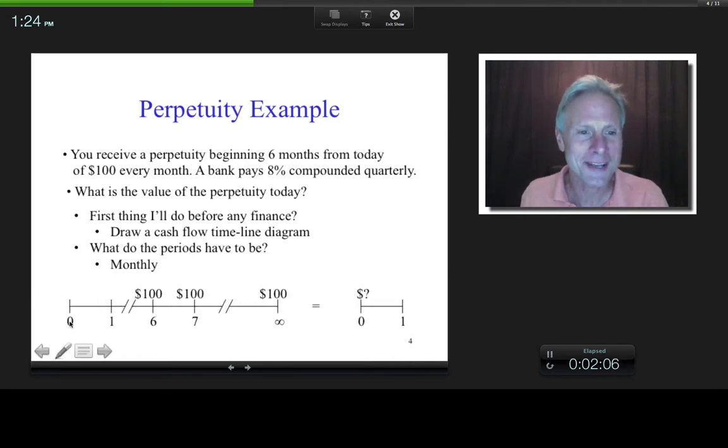Basically, if I call zero today and these are monthly periods, my first $100 begins six months from today. So that's why I've got the $100 right there. And so basically I've got equal cash flows between equal time periods going on forever starting at month six.